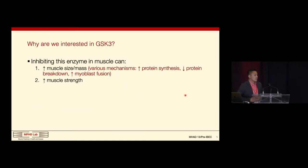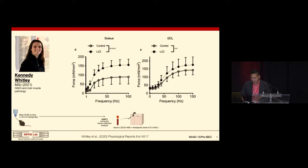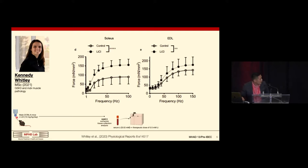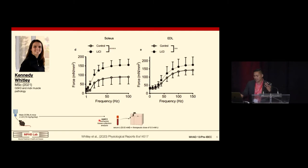The second reason we're interested in inhibiting GSK-3 in muscle is that it can improve muscle strength. Kennedy Whitley, who defended her master's thesis last summer, worked on a side project where she took male C57BL/6 mice and fed them lithium chloride at 10 milligrams per kilogram body mass per day for six weeks. After six weeks, we euthanized the mice and collected muscles for contractile and biochemical analysis, as well as serum to measure lithium concentration.